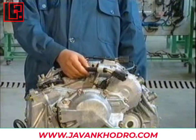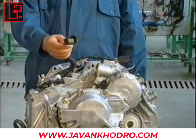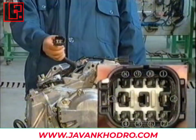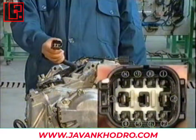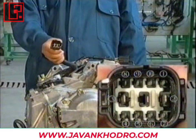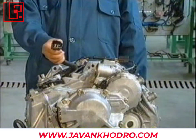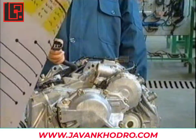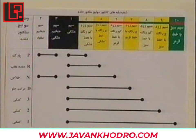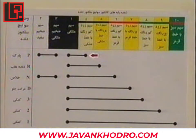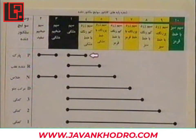اولین مرحله بررسی کانکتور سلکتور دنده است. همان‌طور که گفته شد وظیفه این کانکتور انتقال وضعیت دنده انتخاب شده به واحد کنترل مرکزی گیربکس است. برای تست این کانکتور ابتدا مطابق جدول اتصالات سوئیچ سلکتور دنده که در کتابچه راهنما آمده، ارتباط بین ترمینال‌ها را بررسی می‌کنید. همان‌طور که می‌بینید در وضعیت پارک ترمینال‌های دو به سه، همچنین یک به چهار از طریق سوئیچ سلکتور به هم مرتبط می‌شوند.